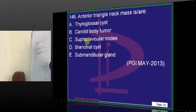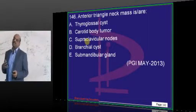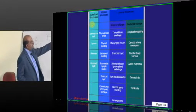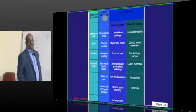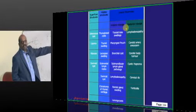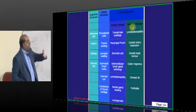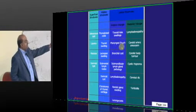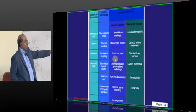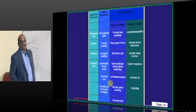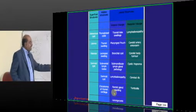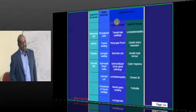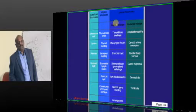What are the different types of neck masses is a common question in the exam. You have some structures which are called midline, some in the anterior triangle of the neck, and some in the posterior triangle. Branchial cysts, pharyngeal pouches, thyroid lobe swelling, submandibular lymph node pathology, any lymphadenopathy, parotid gland swelling, and laryngocele — they are all presenting in the anterior triangle of the neck.